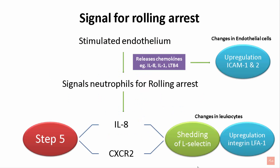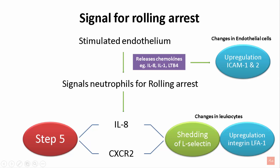After the endothelium is stimulated, it releases certain chemokines like leukotriene B4 and interleukin-8. This interleukin-8 comes in contact with the CXCR2 protein present on the surface of the neutrophil, causing it to shed its L-selectin and causing upregulation of leukocyte function-associated antigen 1. Simultaneously, interleukin-8 also causes upregulation of intercellular adhesion molecules 1 and 2 on the endothelial cells. This is followed by strong adhesion.